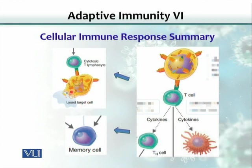In summary, both humoral and cellular immune responses operate by the same mechanisms. B lymphocytes make antibodies — humoral immunity — while T lymphocytes do not secrete antibodies but are directly cytotoxic or help other cells through cytokine production.